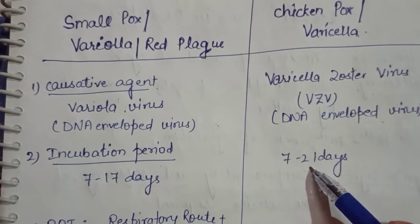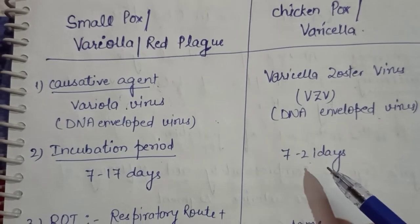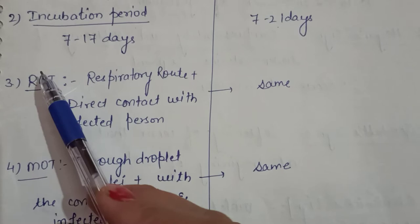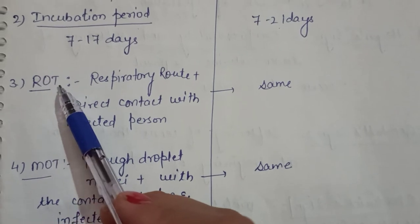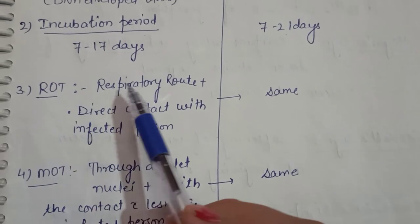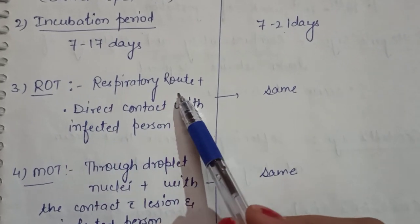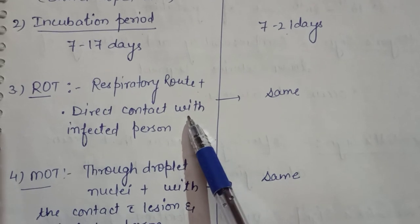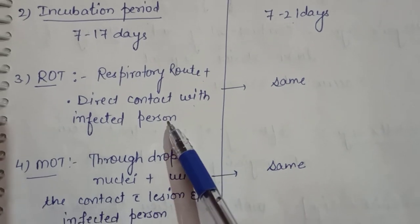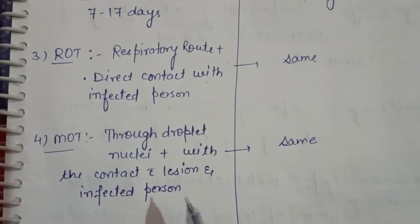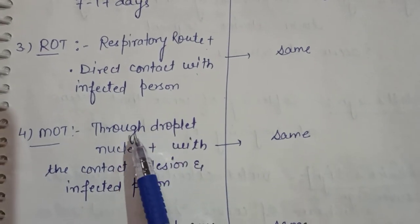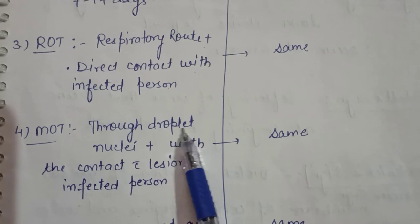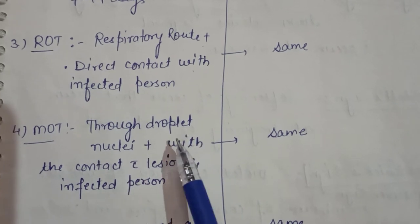The incubation period for chickenpox is 7 to 21 days. The route of transmission for both smallpox and chickenpox is the same — the respiratory route with direct contact with the infected person. The mode of transmission for both is droplet nuclei, plus contact with the infected person.